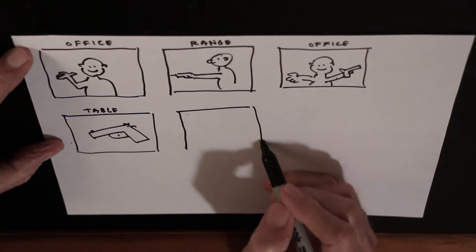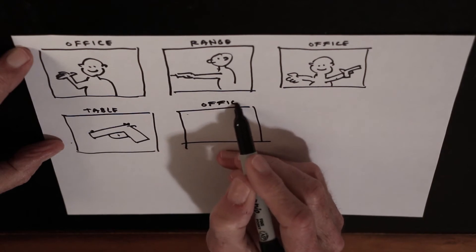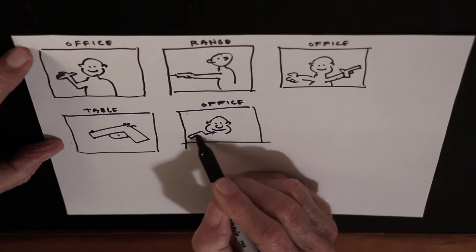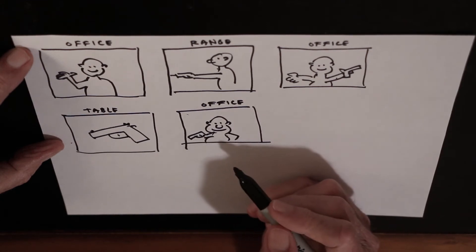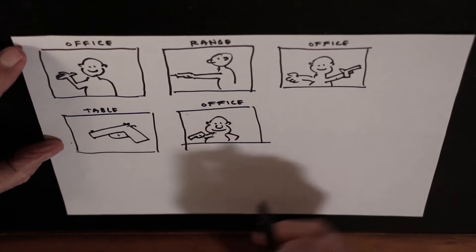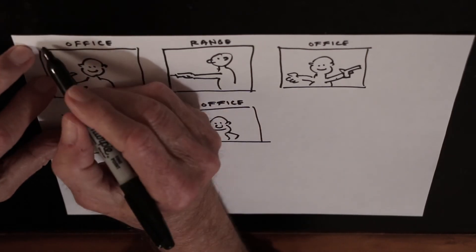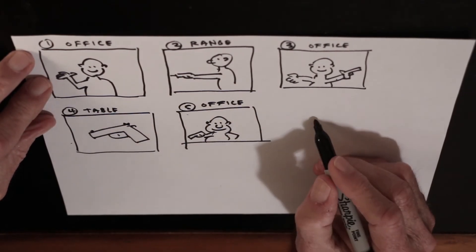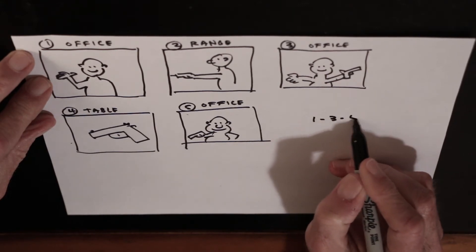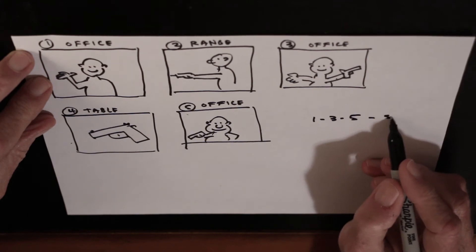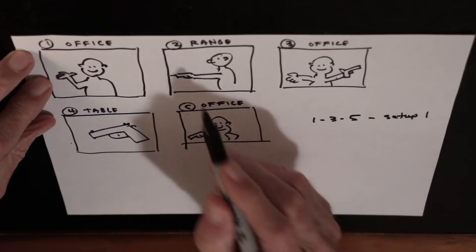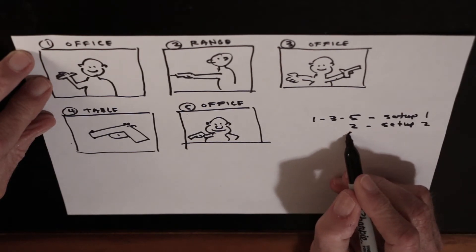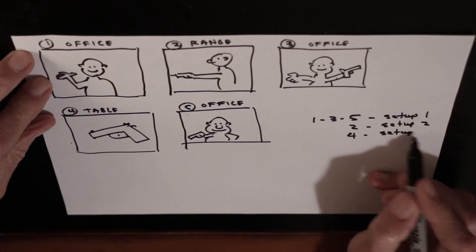And then the final scene will be our narrator again in the office, talking to the viewer and summarizing everything he thought about the gun — what he liked, what he didn't like, and any recommendations he has. So we have scene 1, scene 2, scene 3, scene 4, and scene 5. Scenes 1, 3, and 5 are the same setup — we'll call that Setup 1. Scene 2 is a different setup — Setup 2. And scene 4 is a different setup — Setup 3.